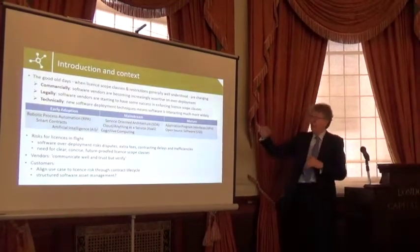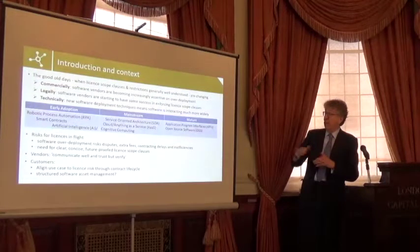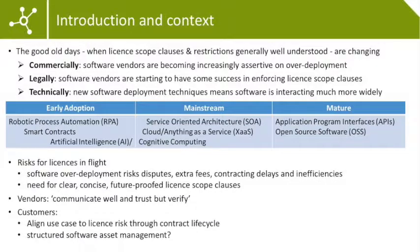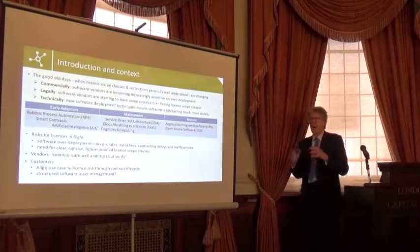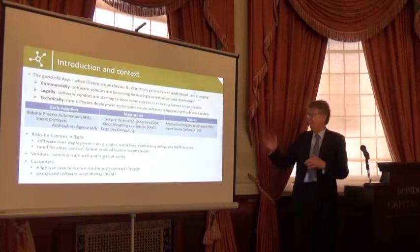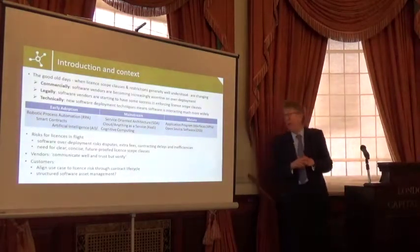Looking at the slide, you have a number of technologies across early adoption, mainstream, and mature stages. Robotic process automation and smart contracts are at the early stage. AI is starting to get more mainstream. Service-oriented architecture, the cloud, and XaaS — anything as a service — are in the mainstream now. APIs and open source software are mature.